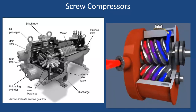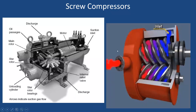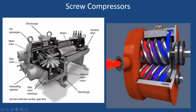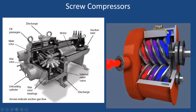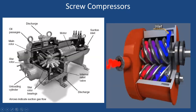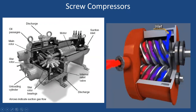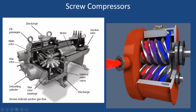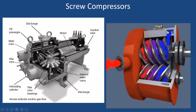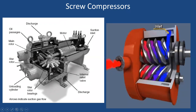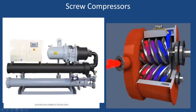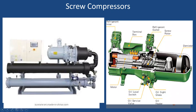The screw compressor works similarly to a screw pump. It has either one or two screw members. Refrigerant is trapped in the screw members, and as it advances forward, its volume decreases and it is compressed, then delivered from the discharge line. Screw compressors are available in both hermetic and open systems. One configuration is the hermetically sealed unit where motor and screw members are assembled together as a screw chiller.